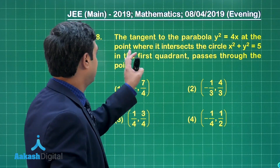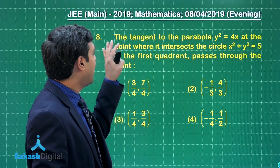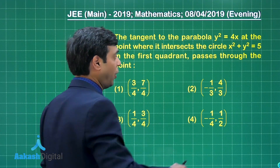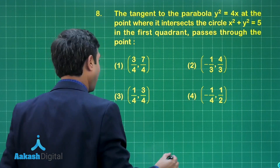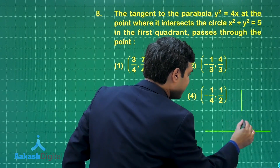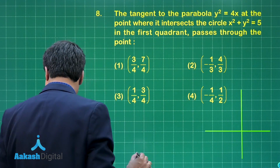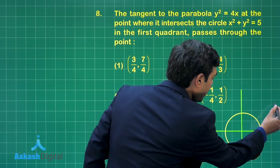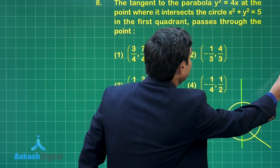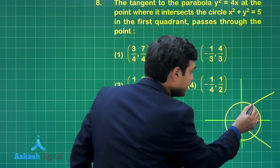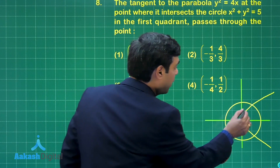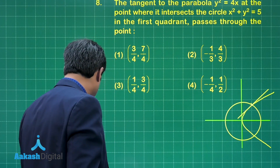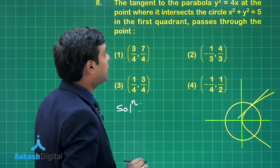Question number 8: the tangent to the parabola y² = 4x at the point where it intersects the circle x² + y² = 5 in the first quadrant passes through the point. Let us start — first make the geometry. We have the x-axis and y-axis, draw the circle here with center at origin, and the parabola y² = 4x. Where these two curves intersect, we have to find the tangent at that point on the parabola.